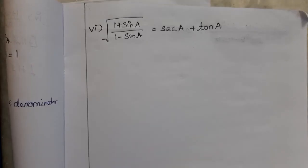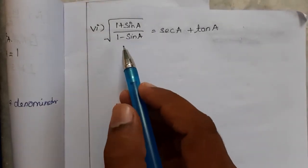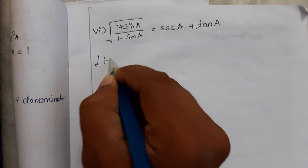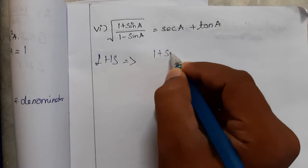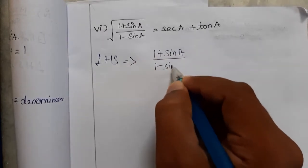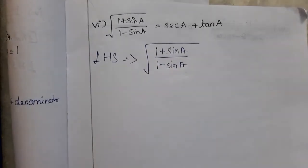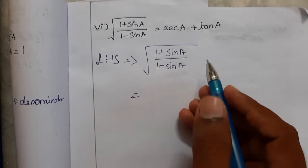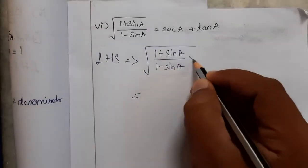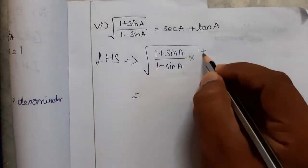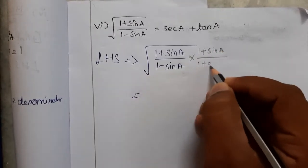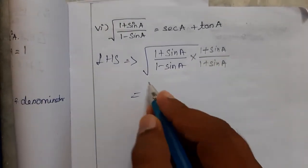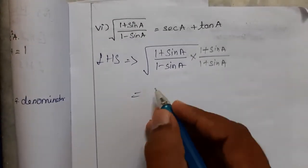Here we go for the next problem: square root of 1 plus sin A divided by 1 minus sin A is equal to sec A plus tan A. Choosing LHS, we have the square root of 1 plus sin A divided by 1 minus sin A. To cancel the square root, we multiply numerator and denominator by the conjugate 1 plus sin A.